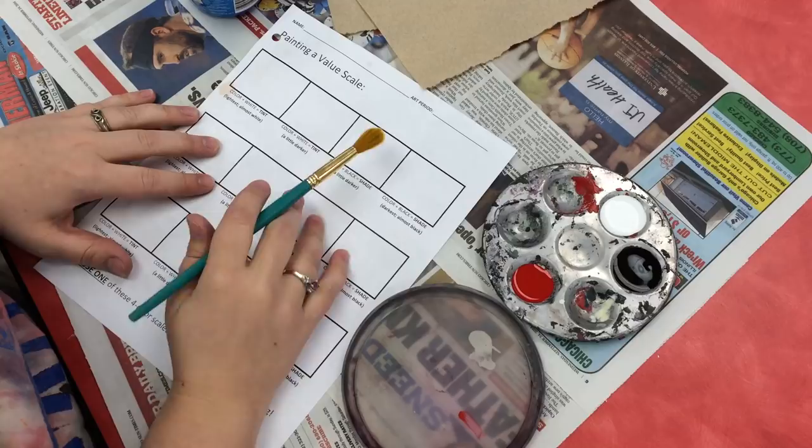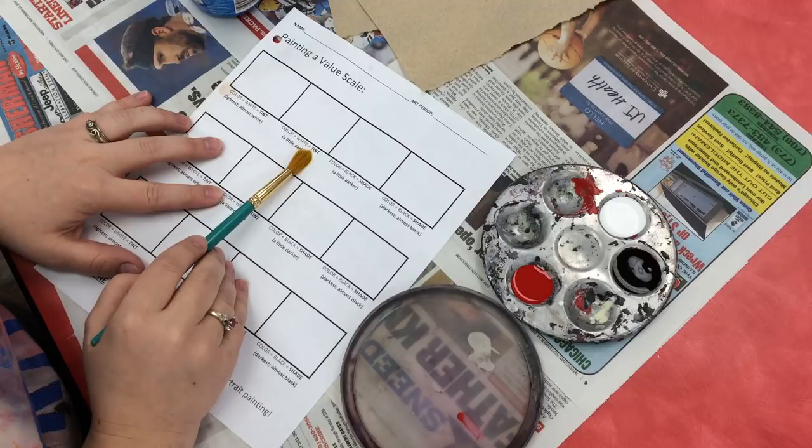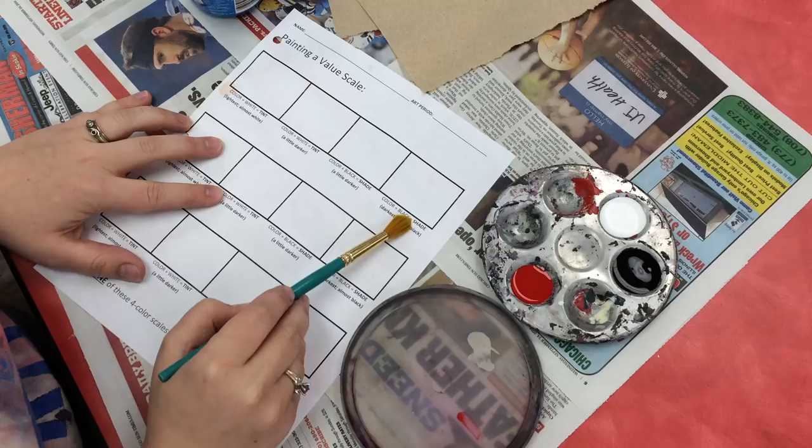To paint your value scale, you have to plan out how many colors you're going to have. In this case, I'm going to do four colors of value, starting with two lighter colors, which is color plus white, called a tint, and then two darker colors, which is your color with some black added to it, which is known as a shade.